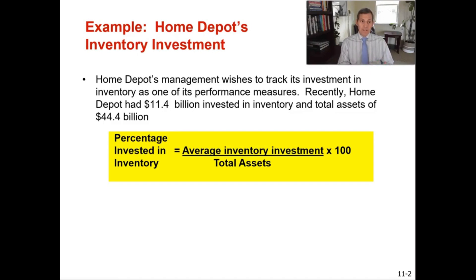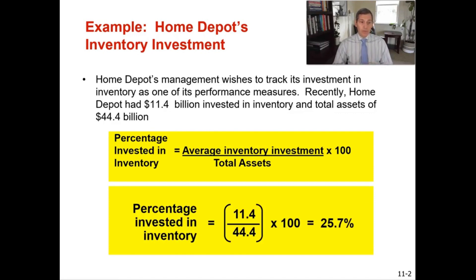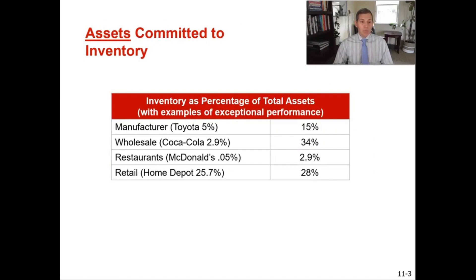When you think about the amount committed to inventory, that's why you want a lower number, because generally many organizations want to have other assets — more buildings, more cash, more investments — and less of their money tied up in inventory. So having a lower percentage invested in inventory is generally a good thing. Home Depot has $11.4 billion invested in inventory. Dividing that by their total assets of $44.4 billion gives them a percentage invested in inventory of 25.7%.